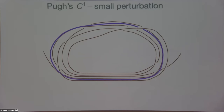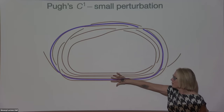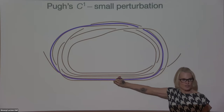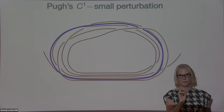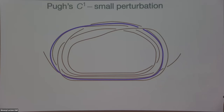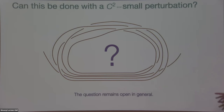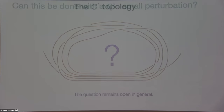To do that in the C2 topology turns out to be impossible. There are examples — related to the horocyclic flow — where there's no way that a perturbation supported in a neighborhood of an orbit can actually close that orbit in a C2-small way. So the question of whether the Closing Lemma is true for C2 is an open question, which is kind of remarkable — it's been open since 1967. This illustrates one problem; I'll give you many other problems that continue to be open in higher topologies.